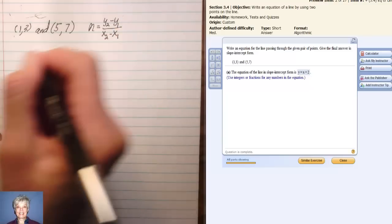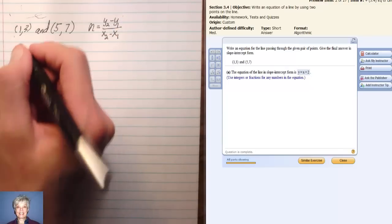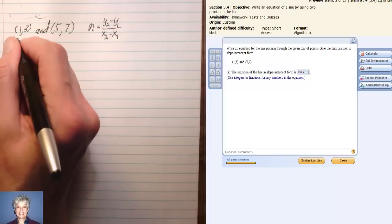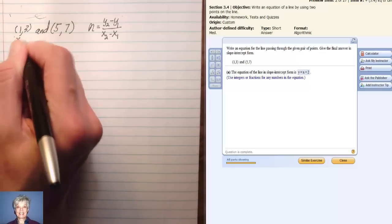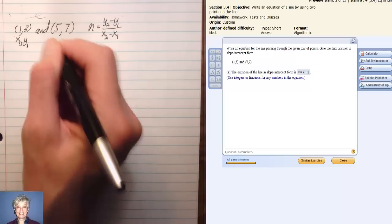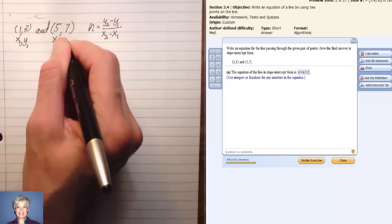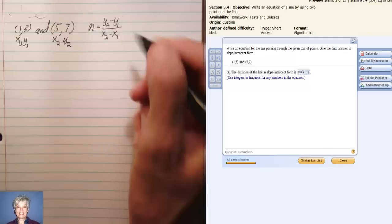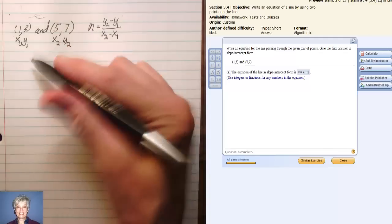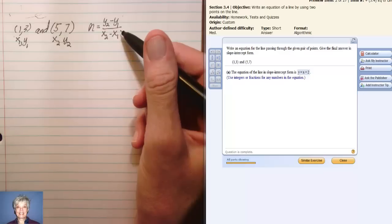You found slope in beginning algebra; let's find it again. This first point is going to be x₁, y₁ and the second point is going to be x₂, y₂. I'm going to substitute these numbers into this formula.